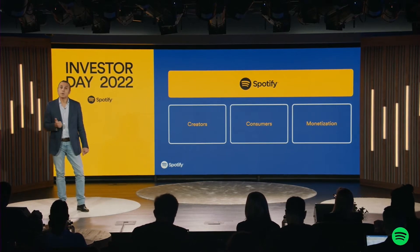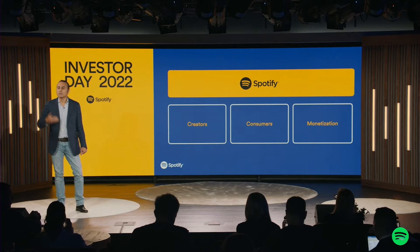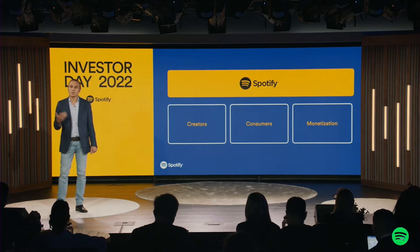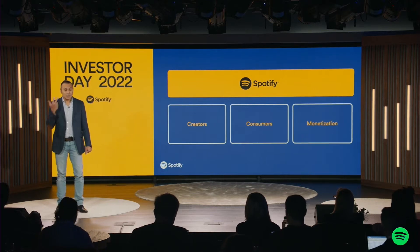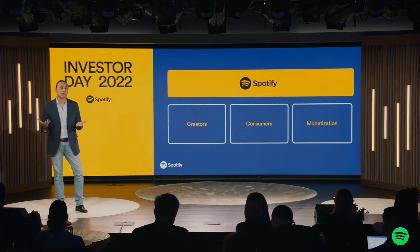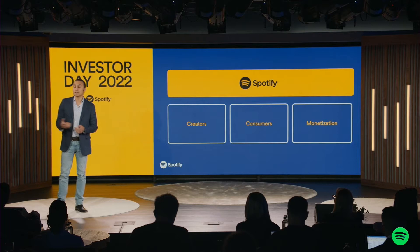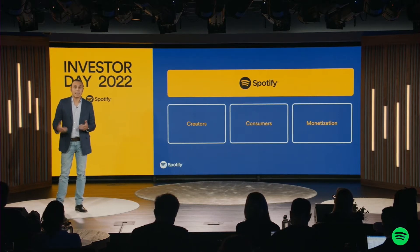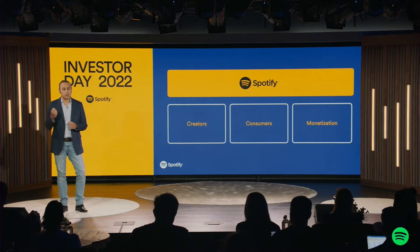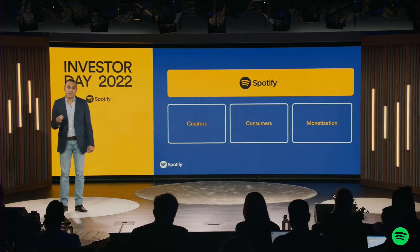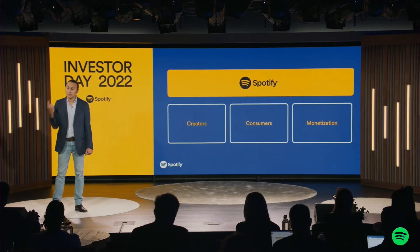Number one: growing the most creators and content from music to podcasts to audiobooks. Number two: growing the most consumers across countries, plans, and cohorts. And number three: growing the most monetization for those creators using ads, a la carte, subscription, marketplace, and monetized fandom. As we scale these formats and business models, there are more and more things on our platform competing for consumer and creator value. This sounds like a lot of complexity — but we've built a machine learning system that now enables us to rein in that complexity and turn it into an advantage.